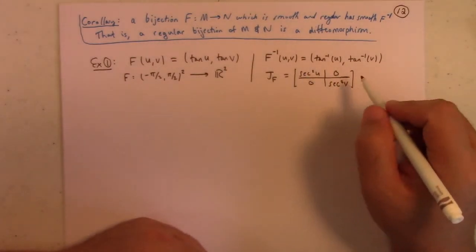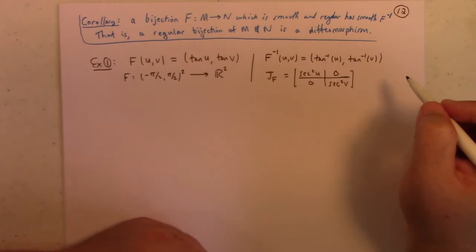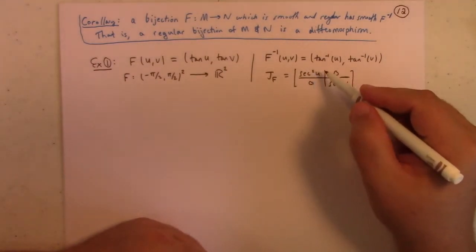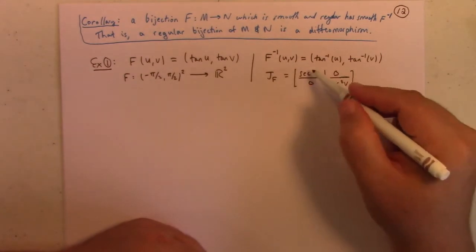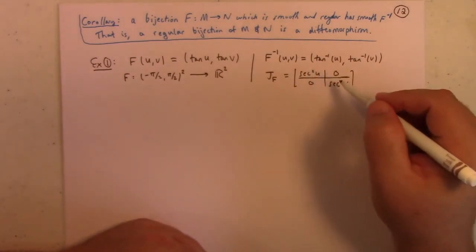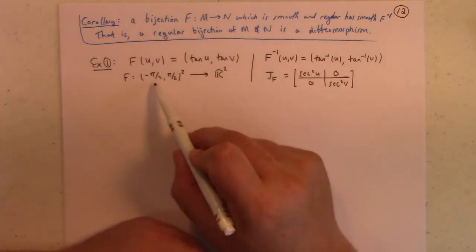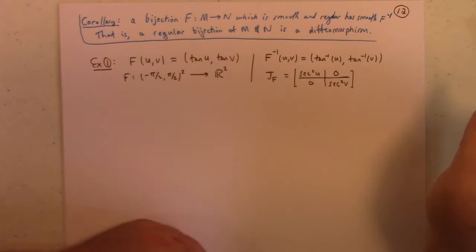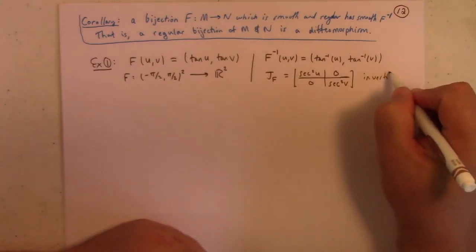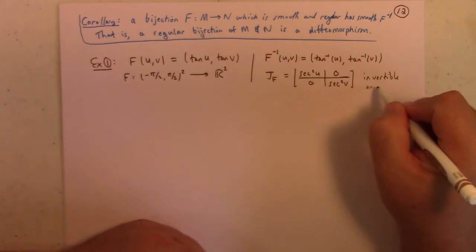But, as you can see, this Jacobian has rank 2. This Jacobian matrix has rank 2, provided that the secant squared is not 0. Of course, secant is never 0, but it's also not undefined. Okay, so it's defined, certainly, on the open interval from minus pi over 2 to pi over 2. So, this is invertible.